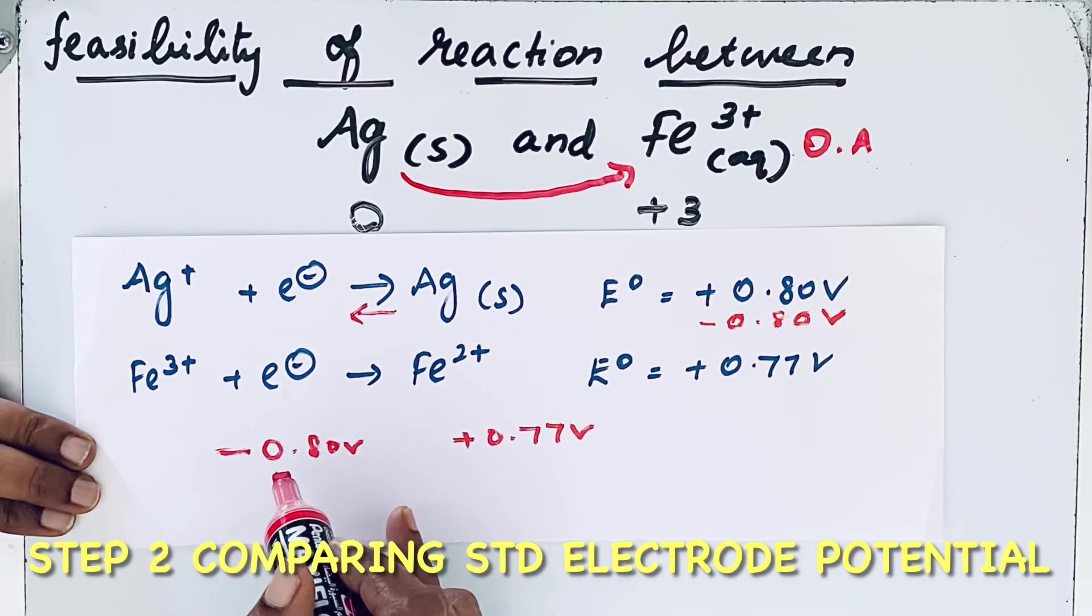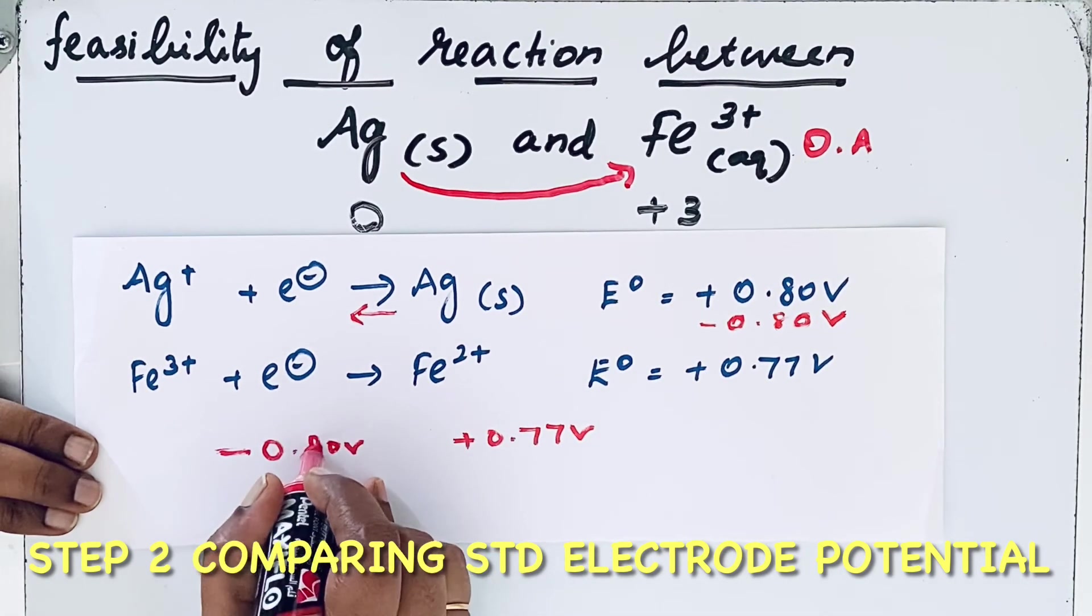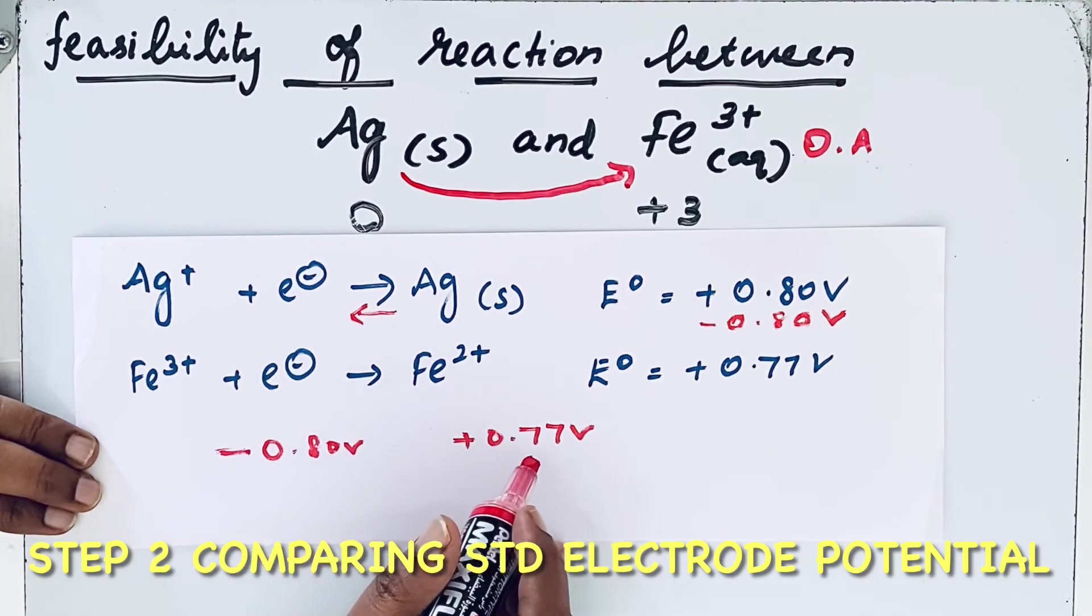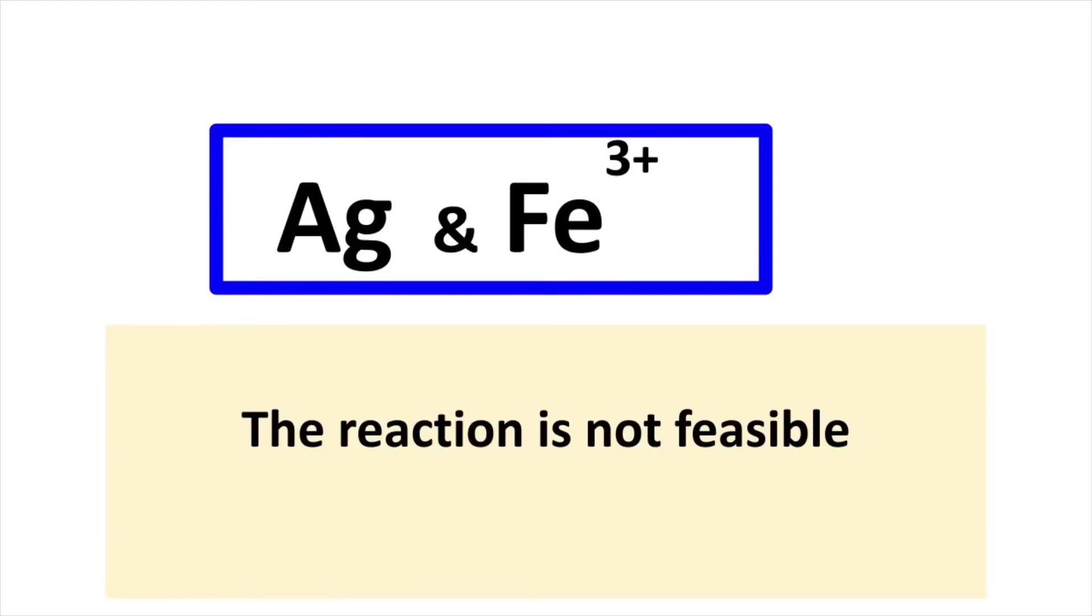So if you compare, which one is greater? Is minus 0.80 volt greater than plus 0.77 volt? So the reaction between Ag and Fe³⁺ is not feasible.